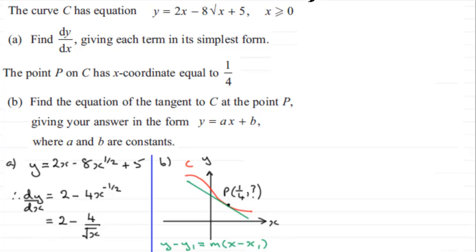So let's just start by saying that for part B when x equals a quarter we're going to get the corresponding y value here. So all we've got to do is substitute a quarter into here. So we've got 2 times a quarter. And then we've got minus 8 times the square root of a quarter. So the square root of a quarter. And then plus 5.